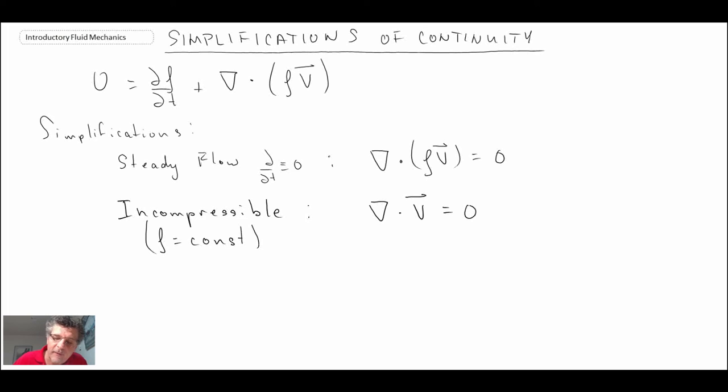And del dot v, remember when we looked at the vector operators, we said that that was the divergence operator. And that's quite often whenever you talk about an incompressible flow, we always say del dot v is equal to zero. But expanding that out, what it looks like is the following. So that would be for an incompressible flow.